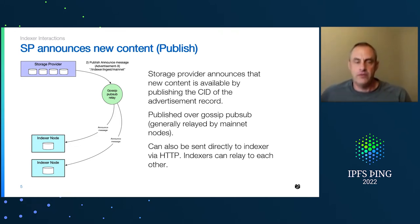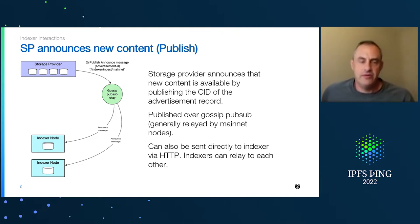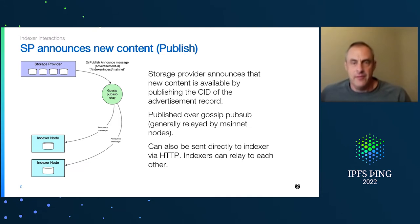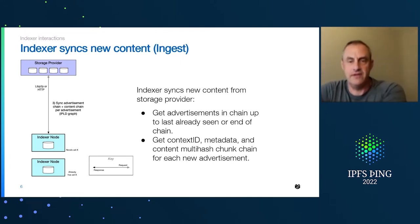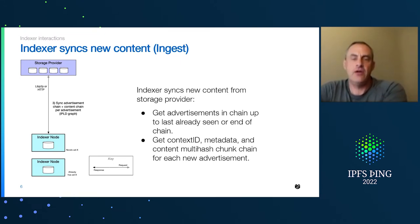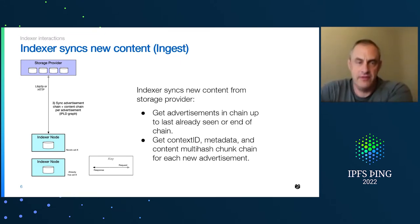This is normally published over a gossip pub sub, usually through the mainnet nodes. It can also be published to indexers directly via HTTP. The storage provider announces it, that gets to the indexers, and then the indexers want to sync that new content. The sync portion of ingest means we're going to go ahead and read all of the latest advertisement records from a storage provider.